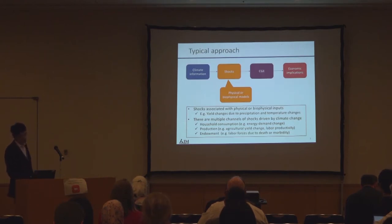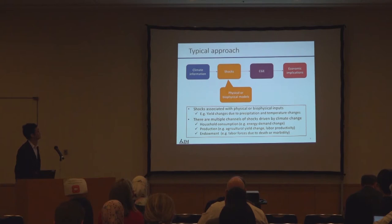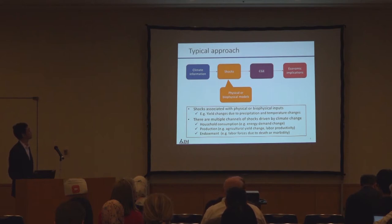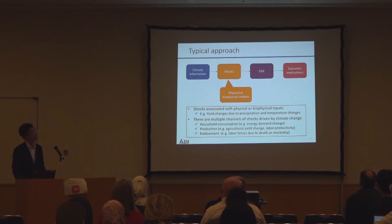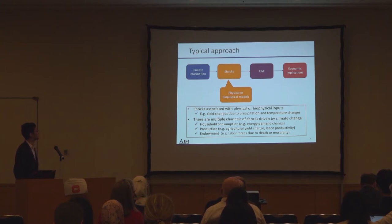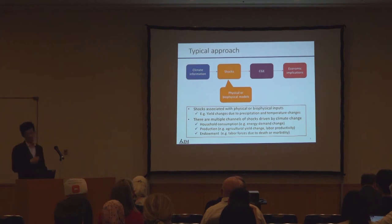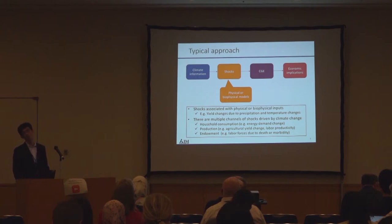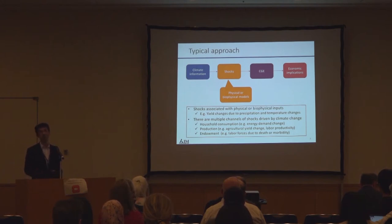The typical approach taken in what we call CGE is something like this. We start from the climate information, and then we translate some physical or biophysical shocks from the climate information, and then fit it into CGE, and finally we get economic implications. For example, the shock — we have crop models, then we get yield changes associated with temperature changes or precipitation changes, and then some 10% or 20% decreases in agricultural sector productivity.